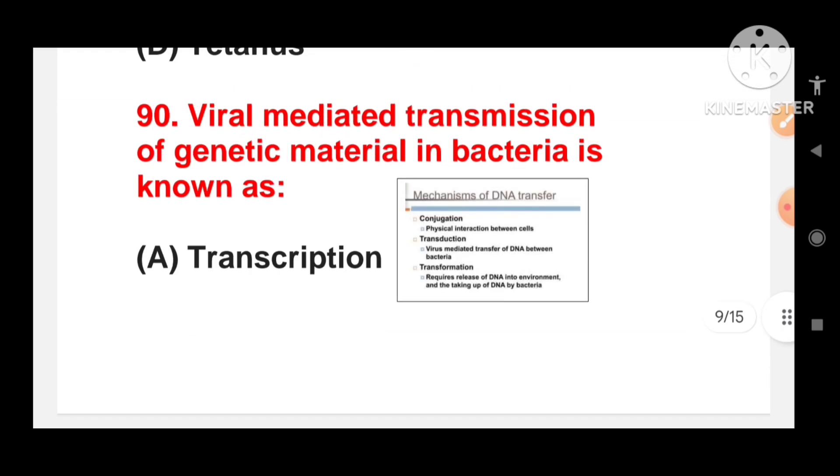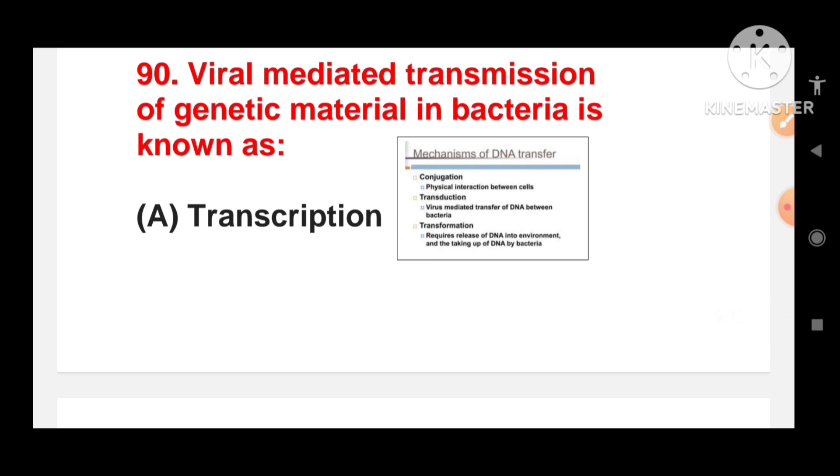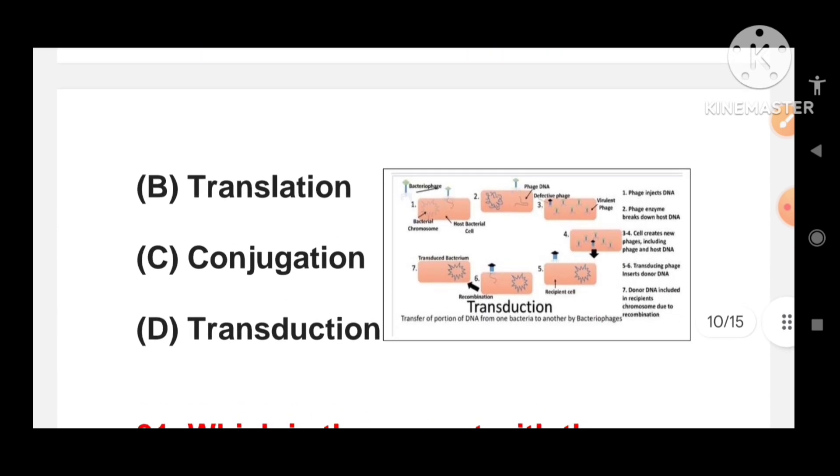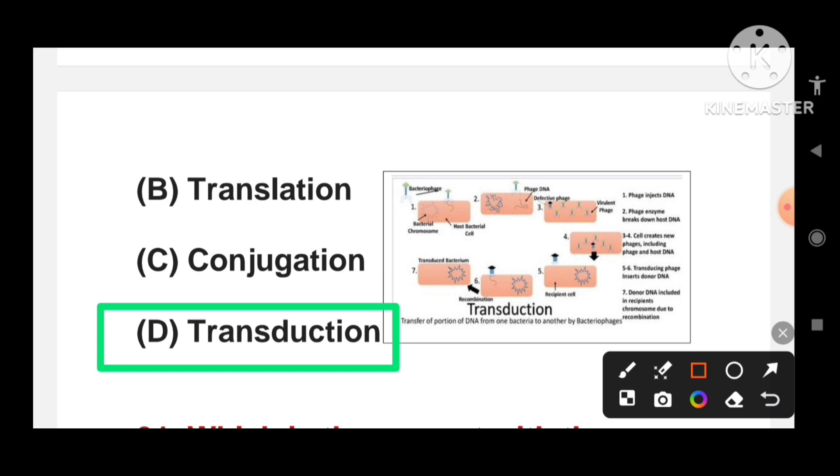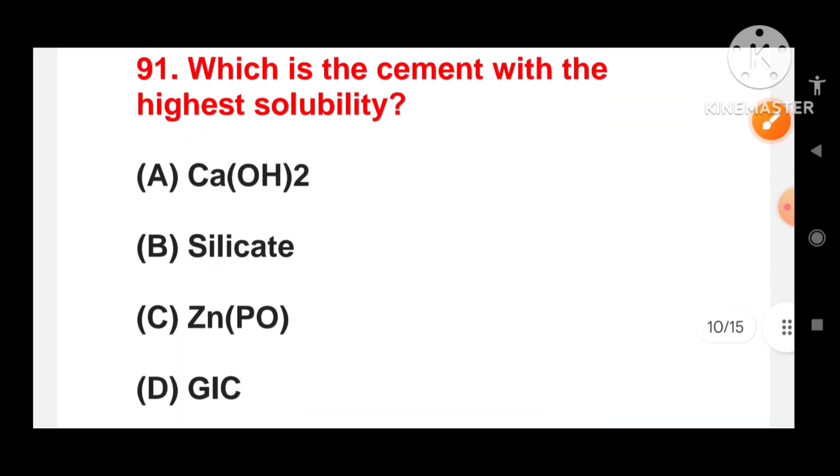Viral mediated transmission of genetic material in bacteria is known as transcription, translation, conjugation or transduction? Viral mediated transmission of genetic material in bacteria, this process is called transduction. You have to remember it is called transduction. In conjugation, there is physical interaction between cells. In transduction, there is virus-mediated transfer of DNA between bacteria. In transformation, it requires release of DNA into environment and the taking up of DNA by the bacteria. But viral mediated transfer of DNA between bacteria is called transduction.